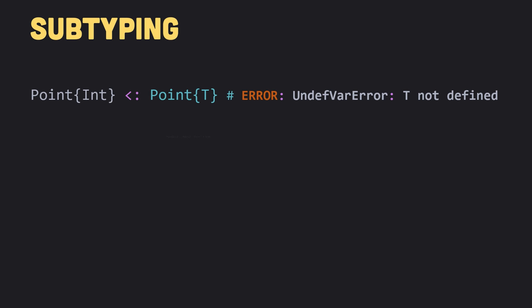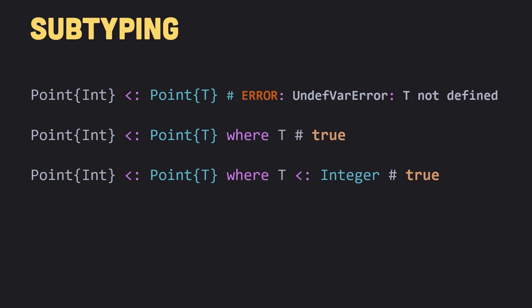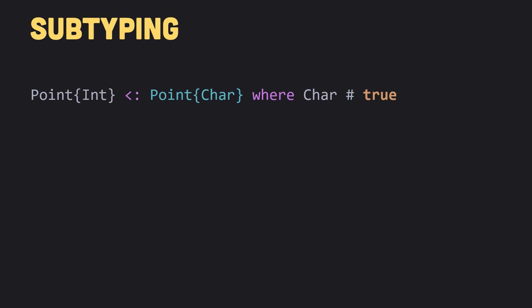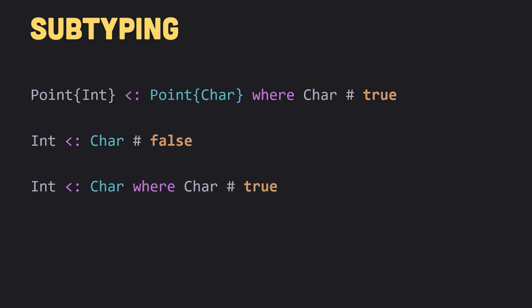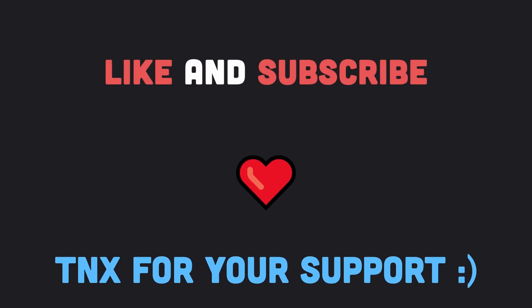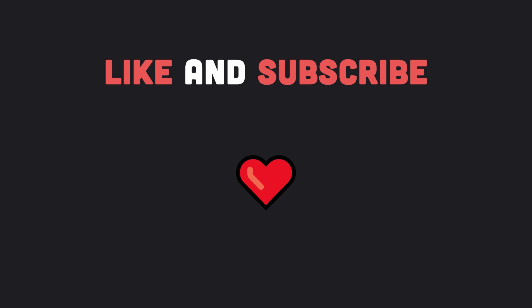A type such as Point is abstract as it does not specify a particular type unless you have defined a type named T. To specify T as a placeholder and not a concrete type, we use the keyword `where` followed by T. For example, Point{Int} is a subtype of Point{T} where T, which returns true. We can also add a constraint that T must be a subtype of Integer — that works fine because Int is a subtype of Integer. The fourth form is a shorthand for the third. When using the `where` keyword, a type like Char is no longer referring to a concrete type. Do not forget to like this video and subscribe to the channel for future content on Julia programming language. See y'all later.